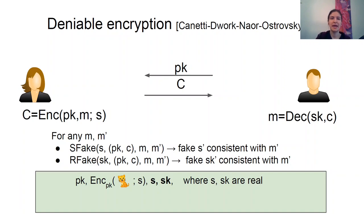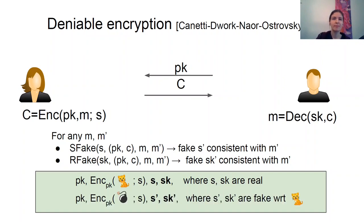More concretely, it shouldn't be able to distinguish between the following two distributions. In one case, it sees an encryption of some innocent message like a cat, and the parties disclose their true random coins. In the other case, the adversary sees an encryption of a sensitive message, but the parties give it fake random coins consistent with the innocent message. In particular, if the adversary tries to decrypt the given ciphertext with a given key, in both cases it will get an innocent message. Moreover, these two distributions are required to be indistinguishable.